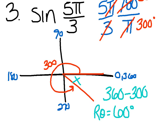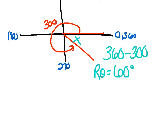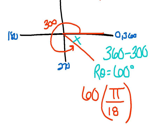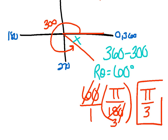Since they gave the problem in radians — 5π over 3 is a radian — convert the answer back to radians. If they give it to you in degrees, keep it in degrees; if in radians, give it back in radians. To convert 60 degrees to radians, multiply by pi over 180. A zero on top cancels with a zero on the bottom, 6 goes into 18 three times, so 60 degrees equals pi over 3 radians. That is the final answer — reference angle equals pi over 3.